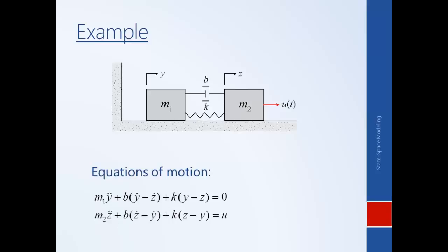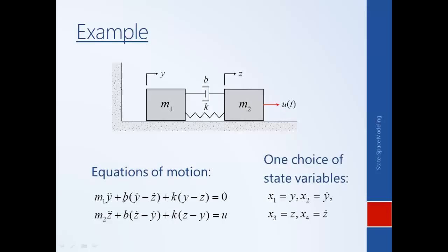One way to transform these equations into state space form is to do a blind substitution, as we had done previously. We had two second order differential equations and we can transform them into four first order differential equations using a change of variables. However, it turns out that this set of state variables is not minimum — we can put our system into state space form with a smaller number of state variables.